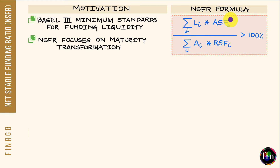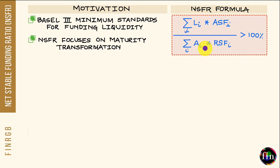NSFR is defined as the ratio of Available Stable Funding to Required Stable Funding. The key word here is stable funding, referring to funding which is stable over a time period of one year. The underlying horizon for the NSFR is one year. To be compliant, any given bank must ensure that its NSFR is greater than the lower limit of 100%.